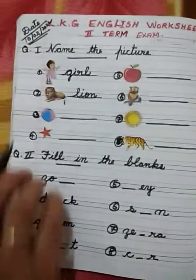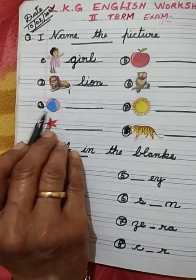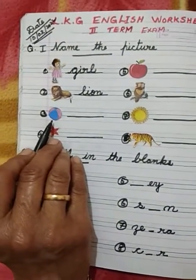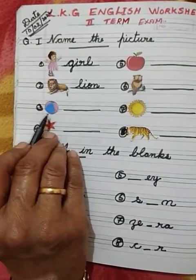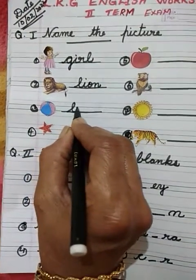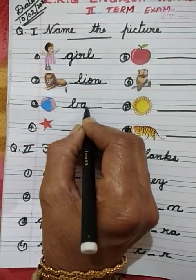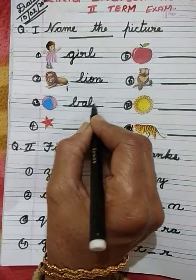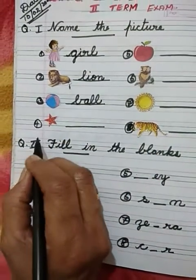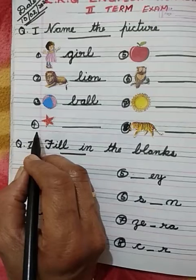Number 3. What is this? Tell me children, what is this? Very good — Ball! Then the spelling of ball: B-A-L-L. Ball. Number 4.